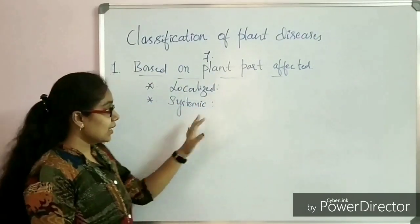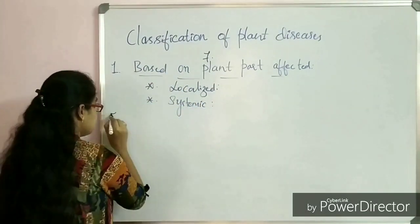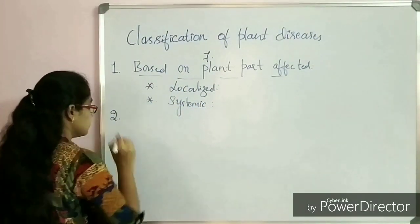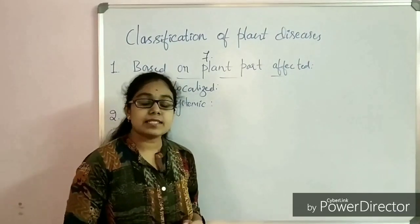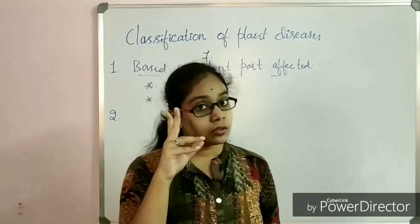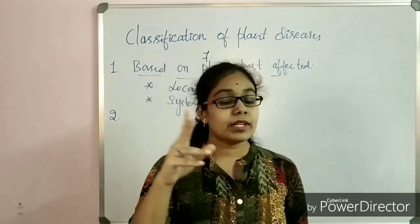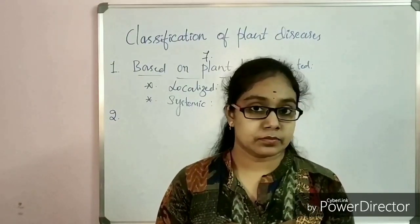Now let us move on to the second category. In the second category, plant diseases are classified based on population and spread.